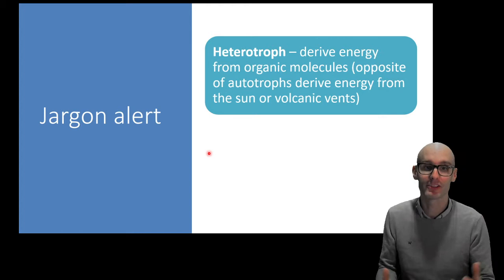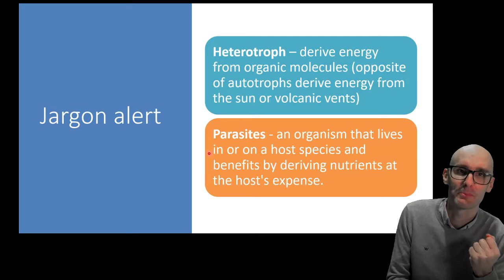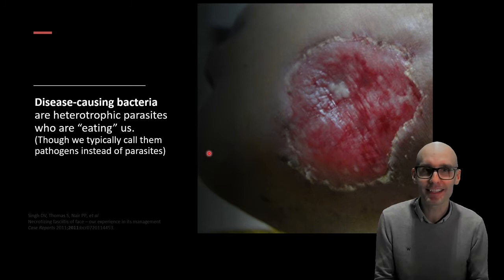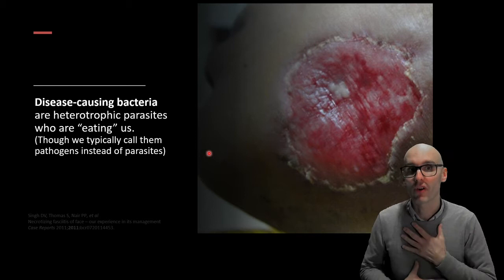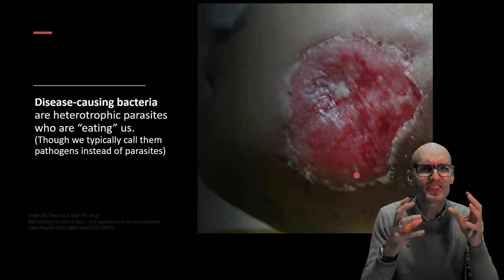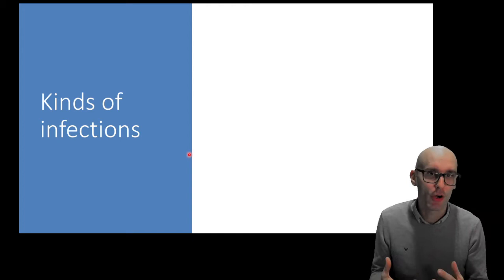Parasite is an organism that lives in or on a host species and benefits by deriving nutrients at the host's expense. This is really the crux of why bacteria cause disease. Disease-causing bacteria are heterotrophic parasites who are essentially eating us. They are living on us or in us and deriving their nutrients from us. So there are several different ways to break up these heterotrophic parasites.